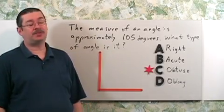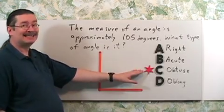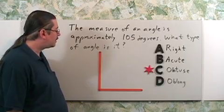The type of angle we want is obtuse, which is choice C. We can get that result as follows.